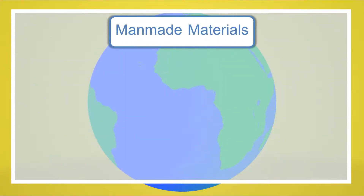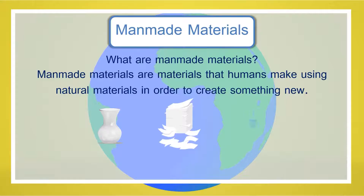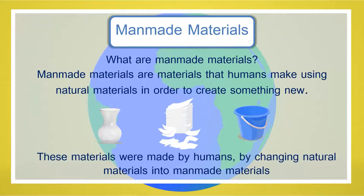Man-made materials. Now, what are man-made materials? Man-made materials are materials humans make using natural materials in order to create something new. Some examples are glass, paper, and plastic. These materials were made by humans by changing natural materials into man-made materials.